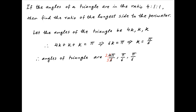Now, let's draw out this triangle and label the vertices as A, B, and C. Let's assume that angles B and C are π/6, and therefore angle A is equal to 2π/3. Since angle B is equal to angle C, the sides opposite to them — AB and AC — are equal.